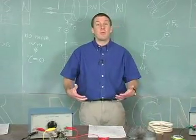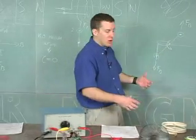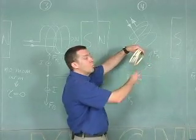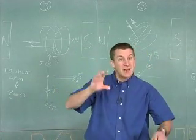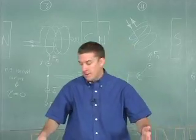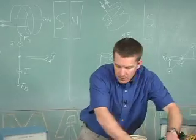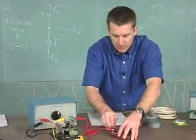Now we've seen the importance of flipping the current. It's necessary to flip the current if we want to maintain the coil's motion in one direction. Now the purpose or the device that does that is the commutator.